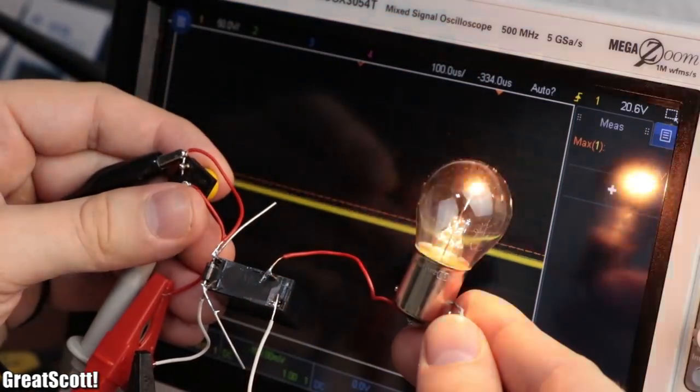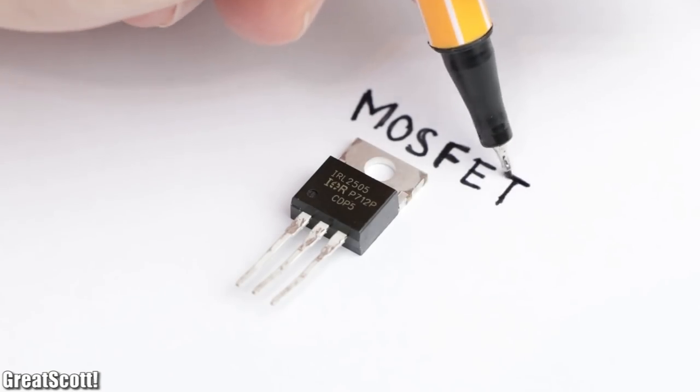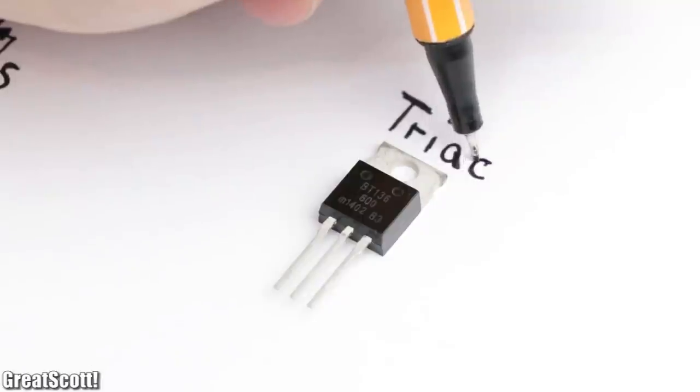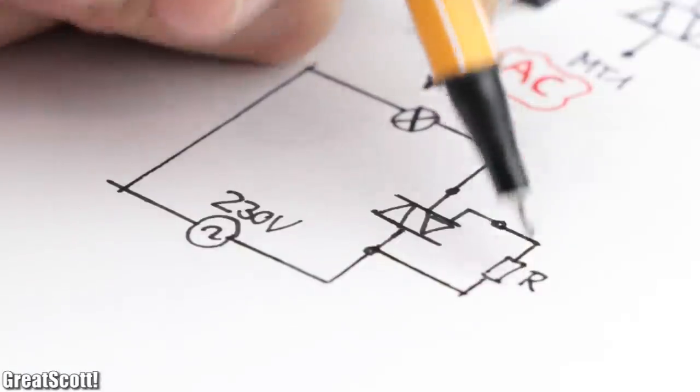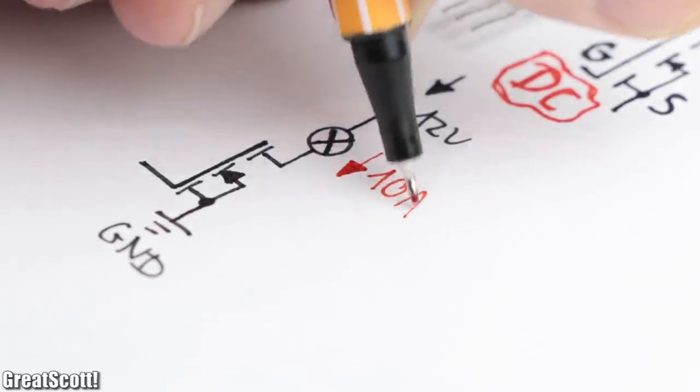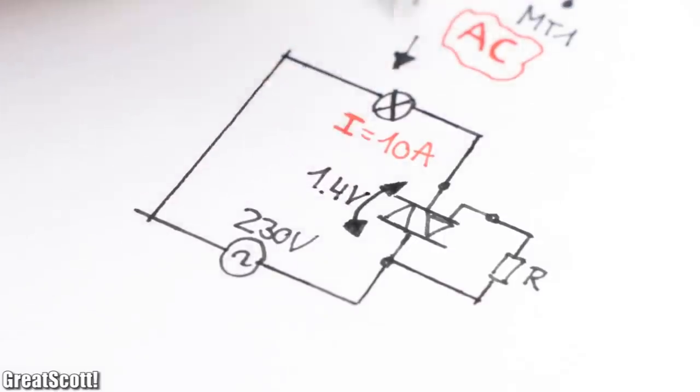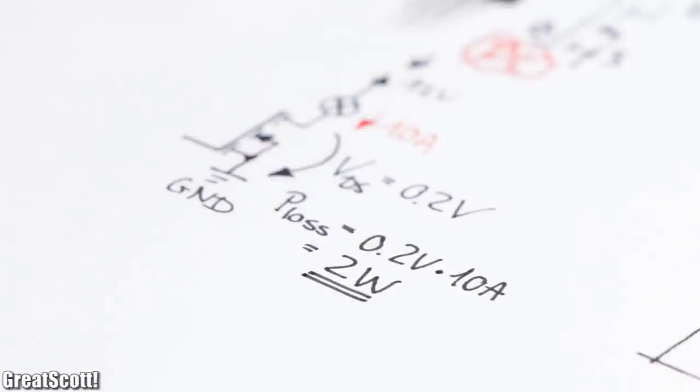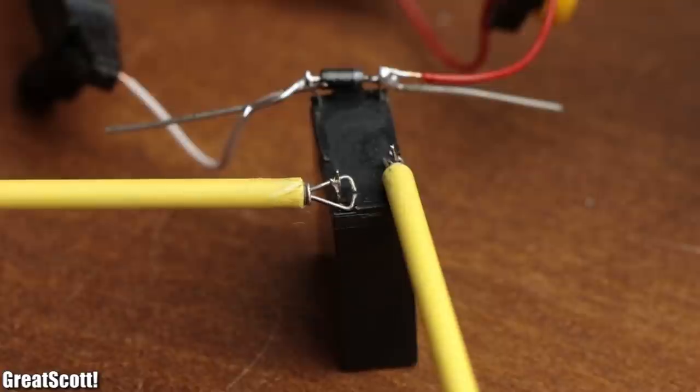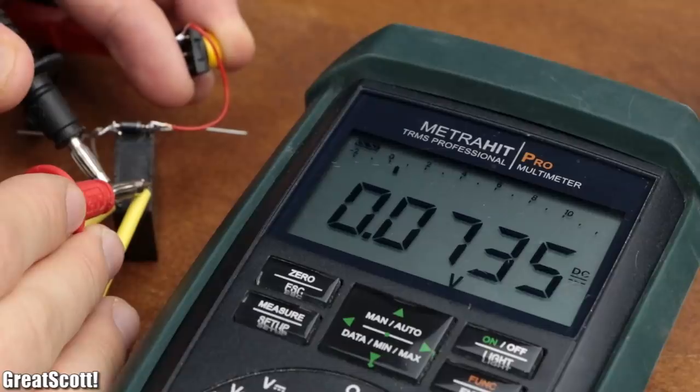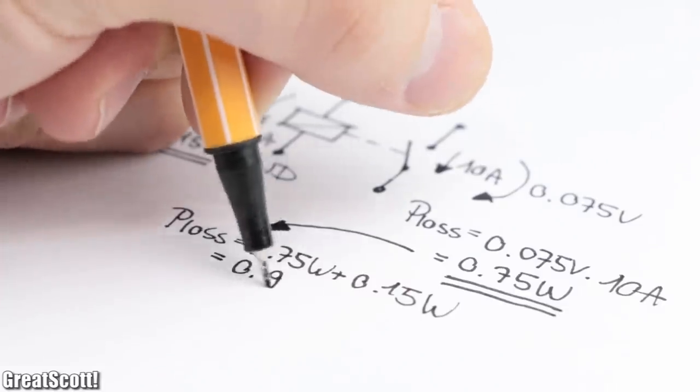But you might be asking yourself, why do I not simply use a MOSFET when switching DC or a TRIAC when switching AC? So let's imagine we create such switching circuits and our load draws 10 amps of current. The problem is that both the MOSFET and TRIAC possess a voltage drop, which multiplied by the current equals the power loss of the switch. The contacts of a relay however have such a small voltage drop at 10 amps that it features the lowest power loss, even if we add the power the relay coil requires.